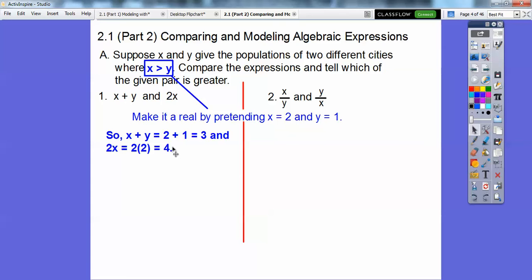So X plus Y is going to be two plus one or three. Two times X is two times two, which is four. Since four is greater than three, then 2X is going to be the greater expression. Made it easy, made it a real life problem. Your book doesn't suggest it. They talk some hogwash on doing some other stuff, which is fine, but it takes more to explain and it's just more vague.